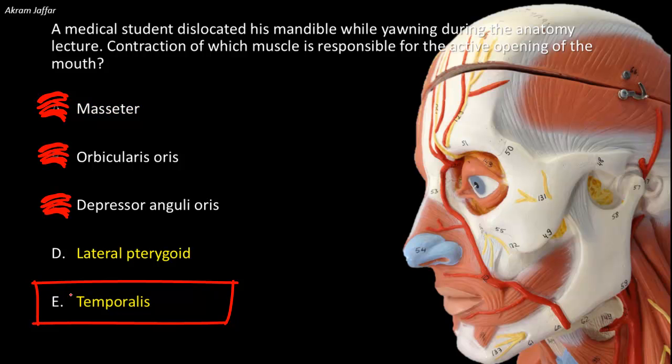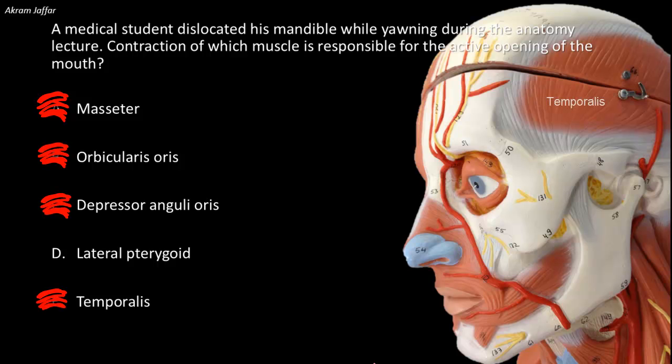Masseter closes the mouth, as we have seen earlier, and so does temporalis. So the fourth option, temporalis, is also wrong.